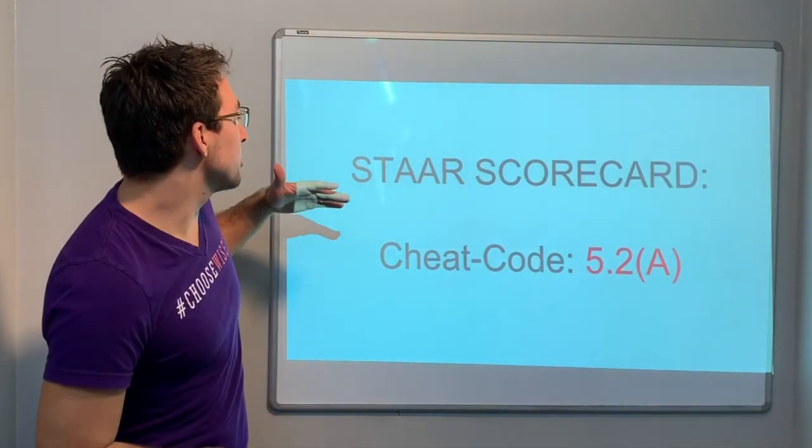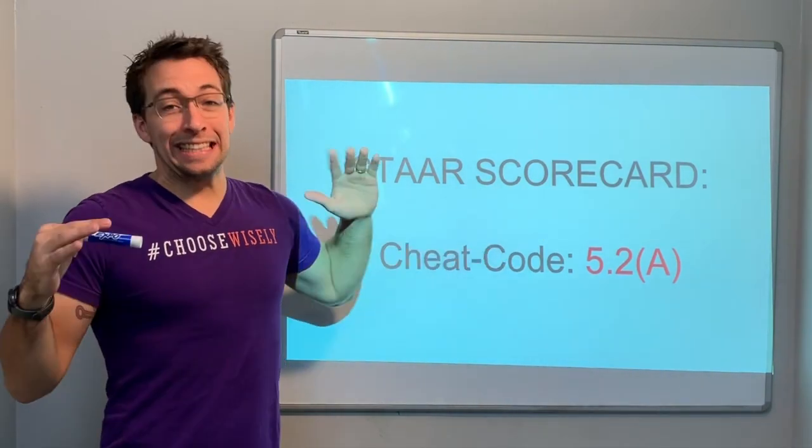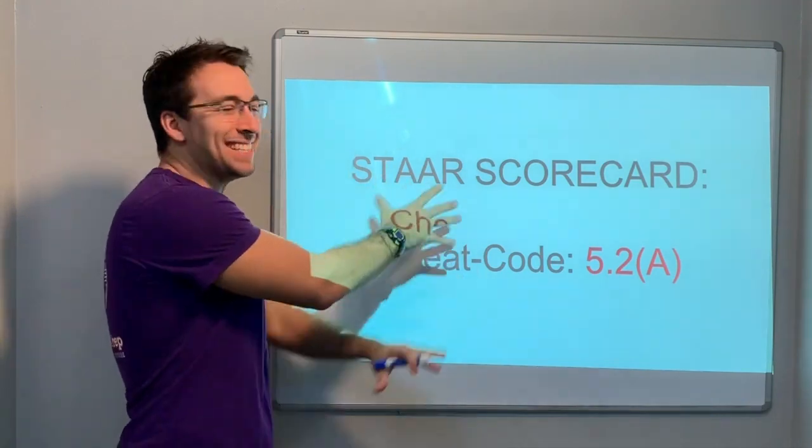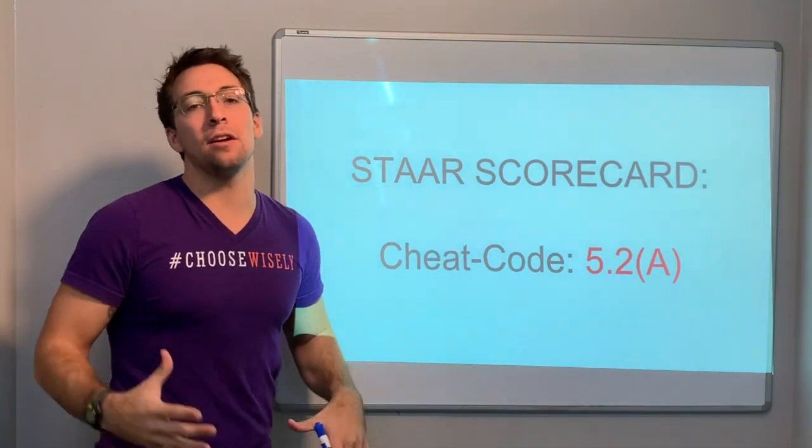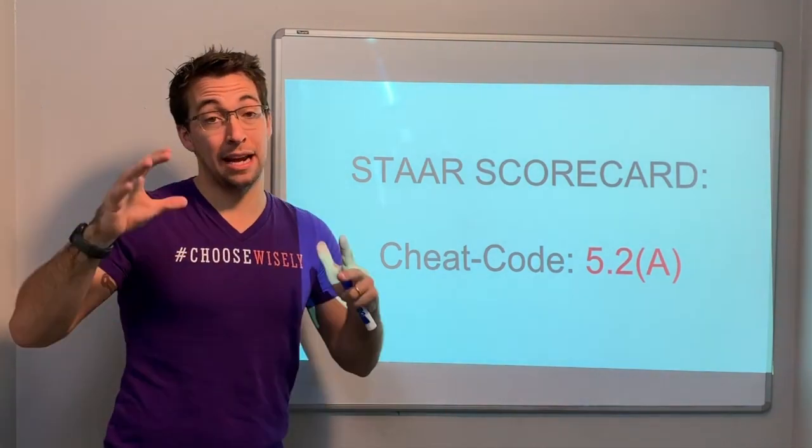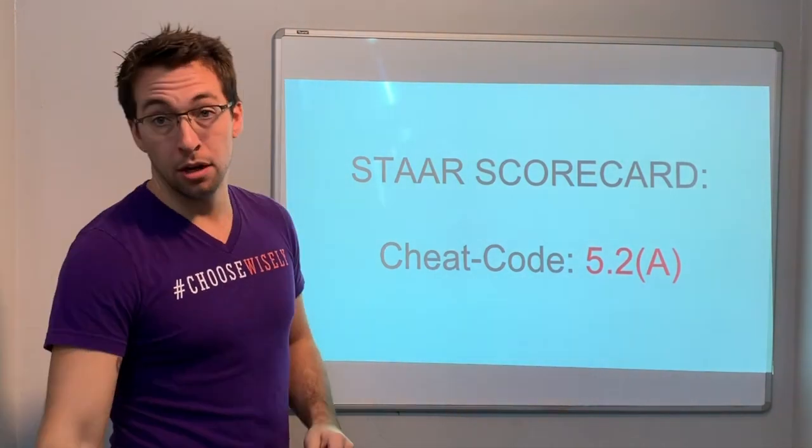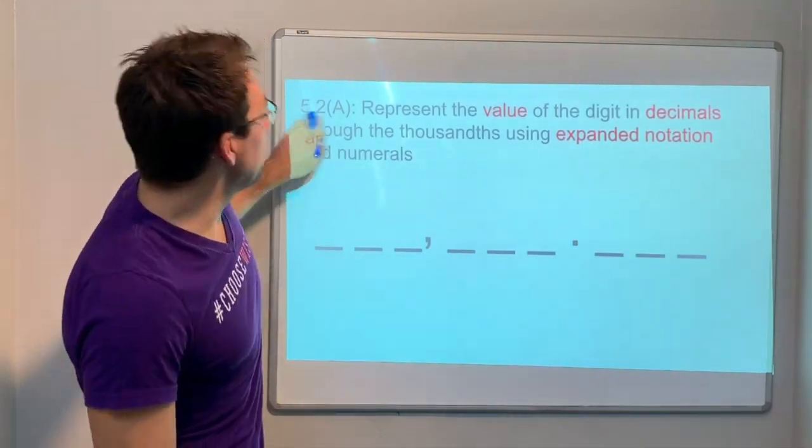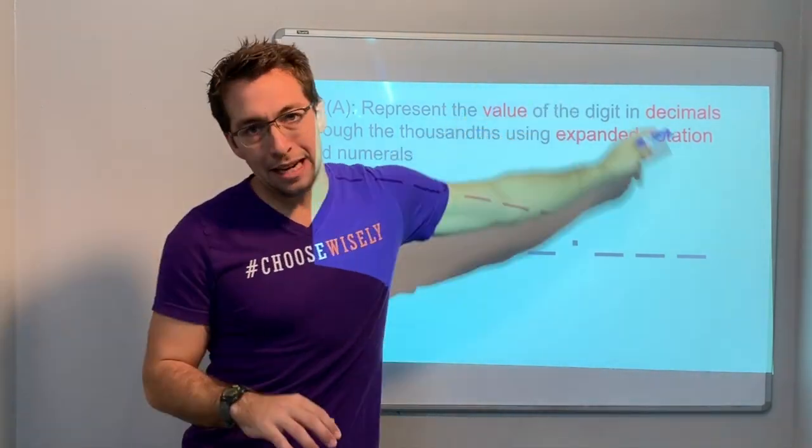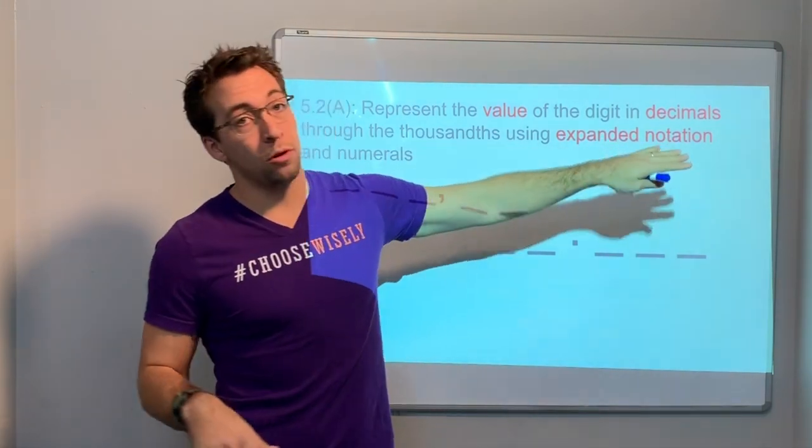Hey everyone, so we're starting a new series, STAR Scorecard. This is cheat code 5.2A. What these videos are about - the series is all about helping you take the STAR test and answer STAR type questions. So 5.2A, we have to know how to represent the value of a decimal in expanded notation form through the thousandths place value.